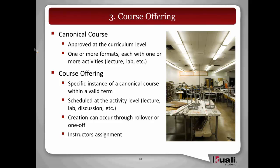Course offerings is actually taking that canonical course and creating a specific instance of the course within a valid term — meaning a term that the canonical course is legitimate for. As courses change, they will have different terms that they become effective with, so the course offering must be within a term that's effective for the canonical course. The scheduling of these courses takes place at the activity level, so individual lectures, labs, discussions, etc., are scheduled by department schedulers or by central offices. We're going to have the ability to occur through either a rollover or a one-off process. In the beginning, the rollover may be very basic and will take all or most of your courses from one year and move them into the like term in another year.